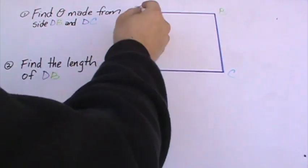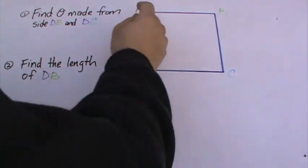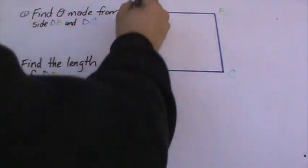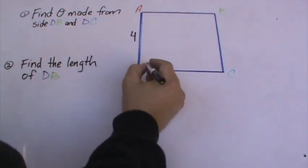So let's look at this perfect square here. We have A, B, C, and D. The first thing we should notice, since it's a perfect square, is that this is a 90-degree angle.